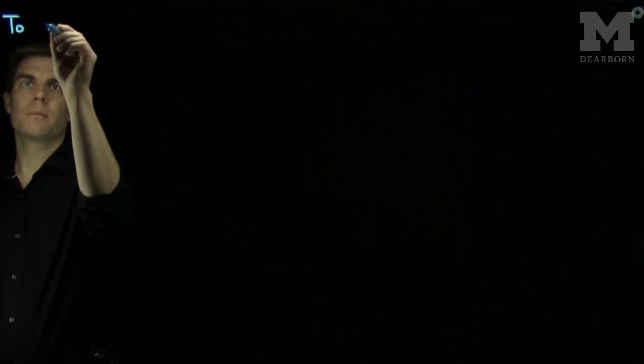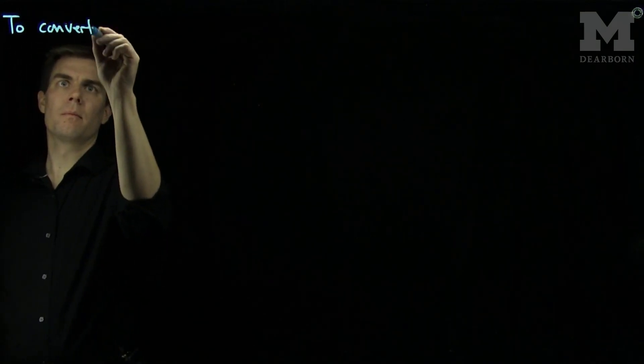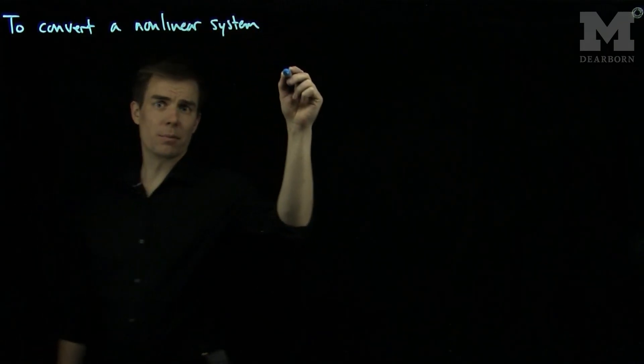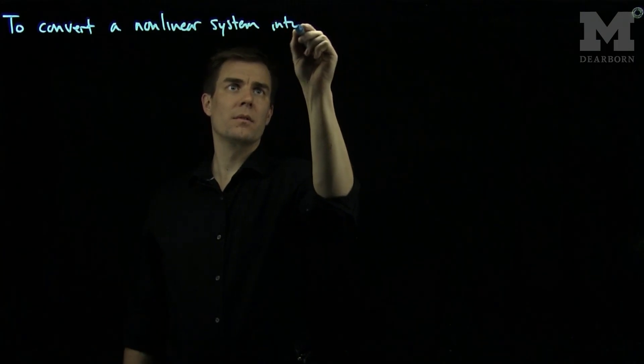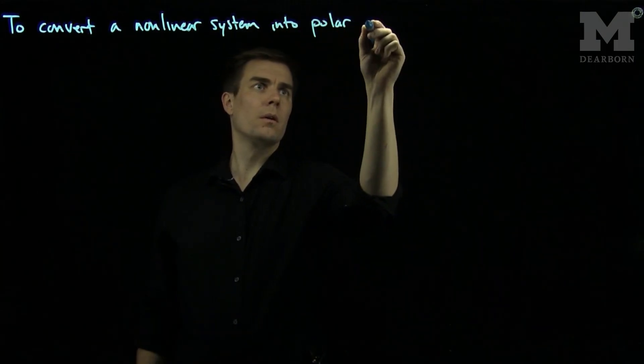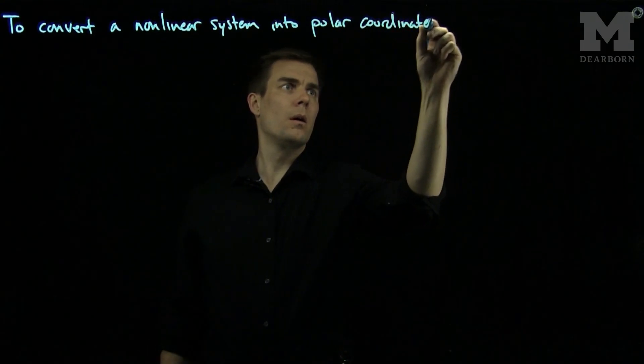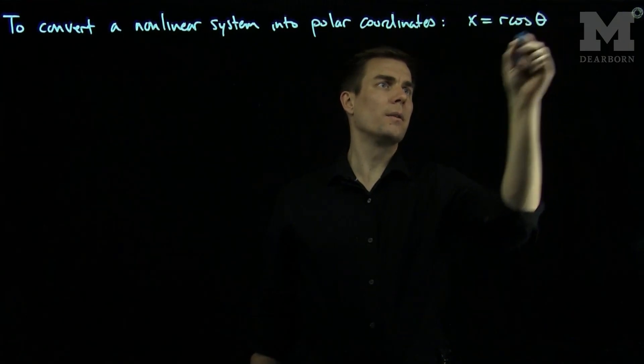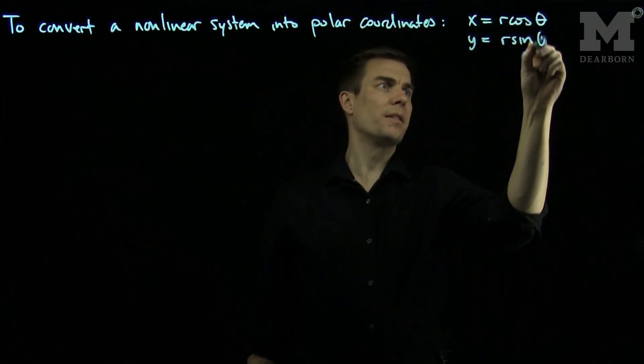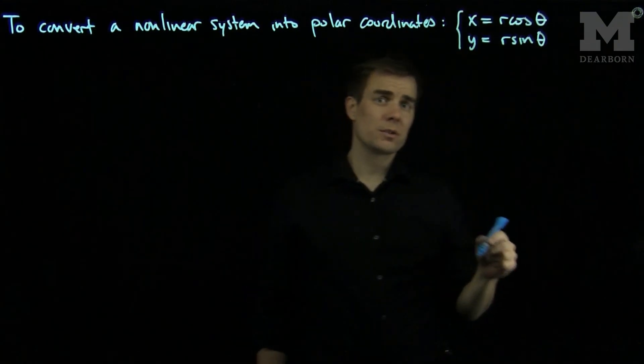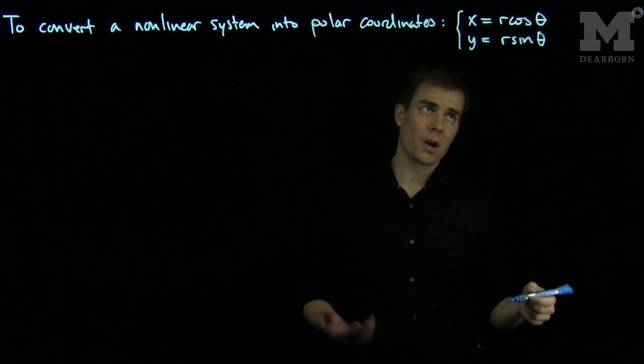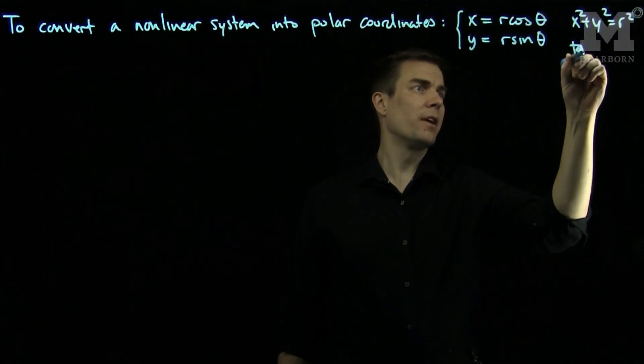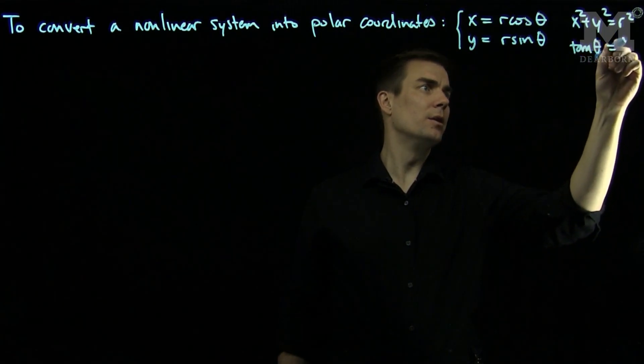To convert a nonlinear system into polar coordinates, we use the fact that x is r cosine theta and y is r sine theta. We can also use the fact that x squared plus y squared is equal to r squared, and the tangent theta is y over x.